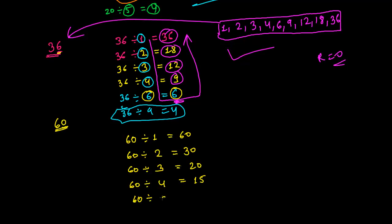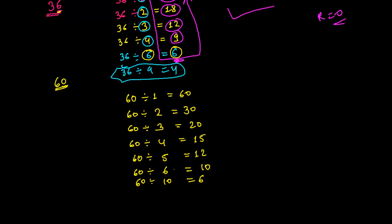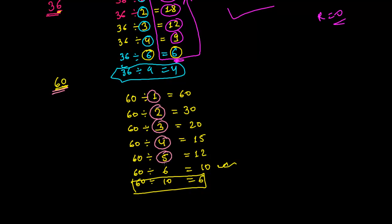60 is divisible by 5 in 12 times — so 5 as well as 12 can divide 60. 6 divided into 60 gives 10. Then 60 divided by 10 gives 6, but those things are already repeated. So the numbers that can divide 60 are: 1, 2, 3, 4, 5, 6, 10, 12, 15, 20, 30, and 60.